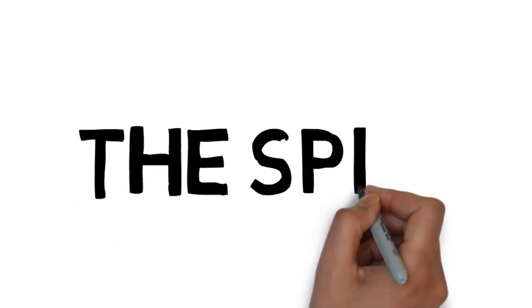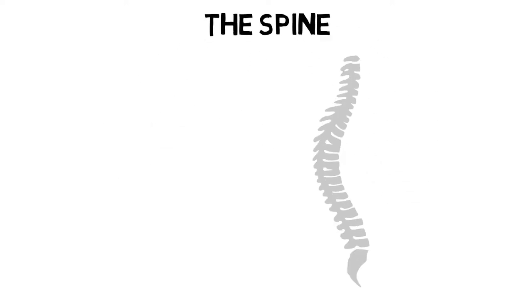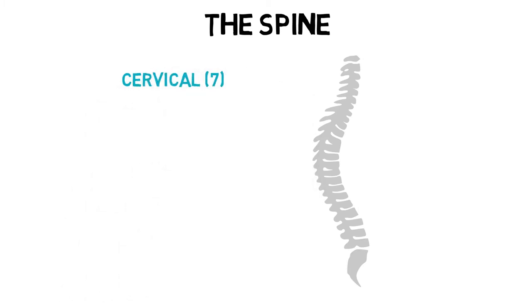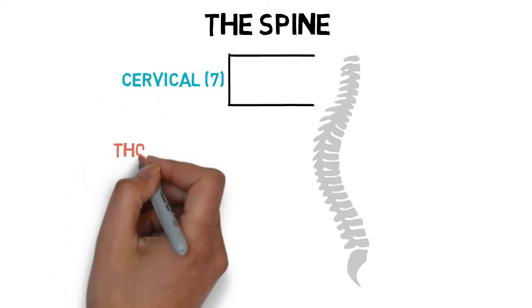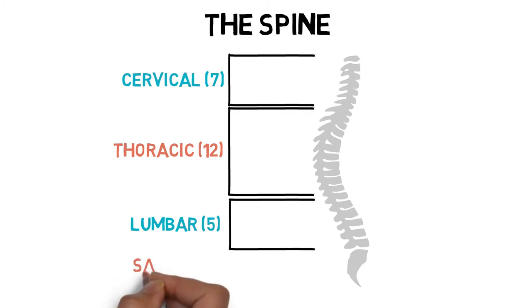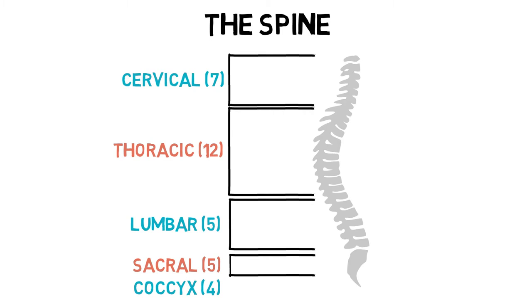The vertebral column is a unique set of 33 bones called vertebrae that house and protect our spinal column. Seven vertebrae make up the cervical curve, 12 make up the thoracic curve, 5 make up the lumbar curve, another 5 make up the sacral curve which are fused together, and finally another set of fused vertebrae consisting of only 4 make up the coccyx, or tailbone.